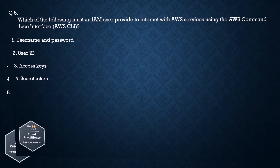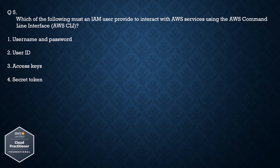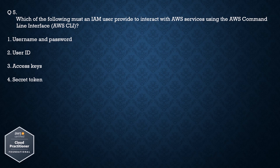Question number 5: Which of the following must an IAM user provide to interact with AWS services using the AWS Command Line Interface (AWS CLI)? Option 1: User name and password. Option 2: User ID. Option 3: Access keys. Option 4: Secret token.